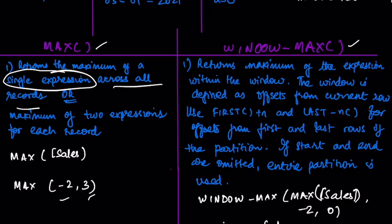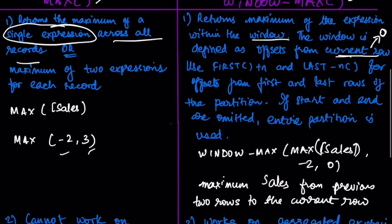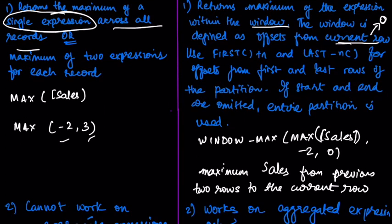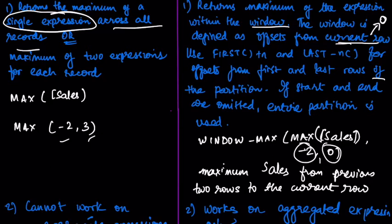WINDOW_MAX, on the other hand, returns the maximum of the expression within a window, and as we have just seen, we can custom-define our window. The syntax uses offsets from the current row, where the current row is always given by an index of zero. We can use FIRST() + n and LAST() - n for offsets from the first and last rows of the partition. If the start and end are omitted, the entire expression will be used, and at that point WINDOW_MAX behaves the same as MAX. For example, if FIRST is defined as -2 and LAST is defined as 0, WINDOW_MAX takes the maximum of sales from the previous two rows to the current last row.